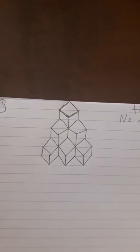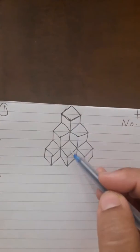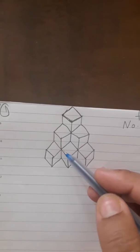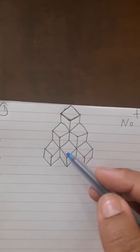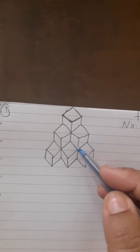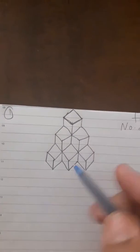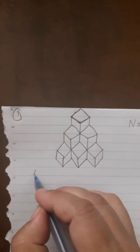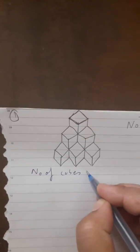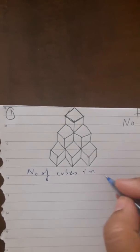You can see there are three columns — one, two, three — a total of three columns. The first column has one cube each, the second column has two cubes, and the third column has three cubes. We will count first the number of cubes in columns of one cube.